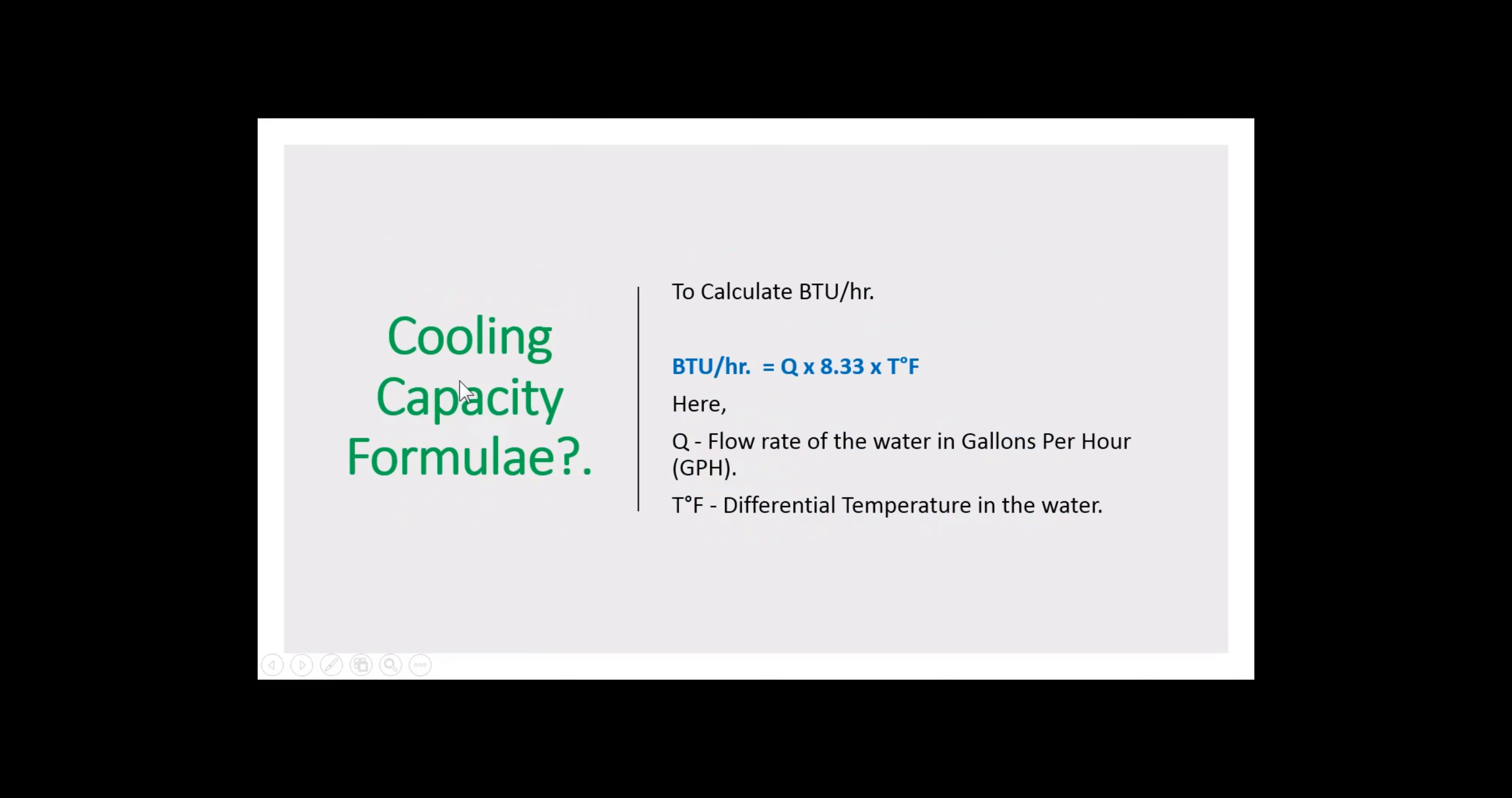Let us see what is the formula to calculate cooling capacity. To calculate British thermal units per hour, BTU per hour equals Q times 8.33 times temperature in Fahrenheit. Here, Q is the flow rate of water in gallons per hour.